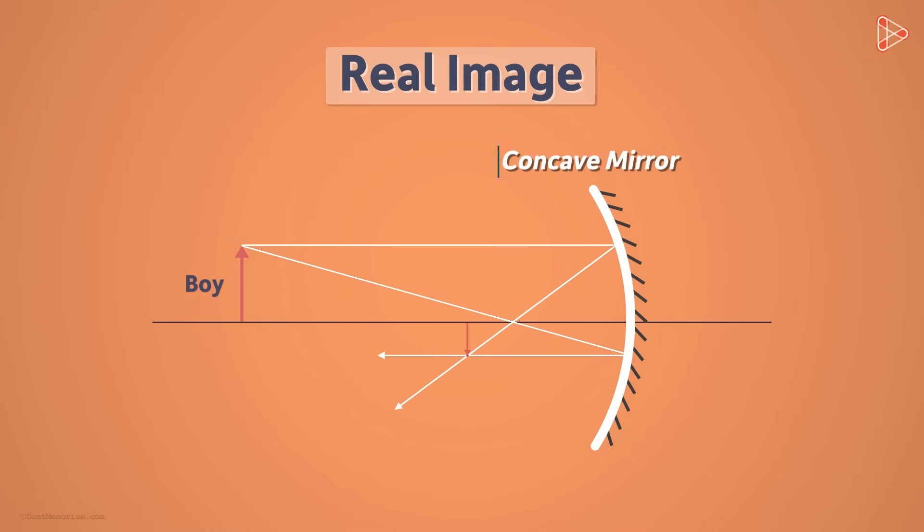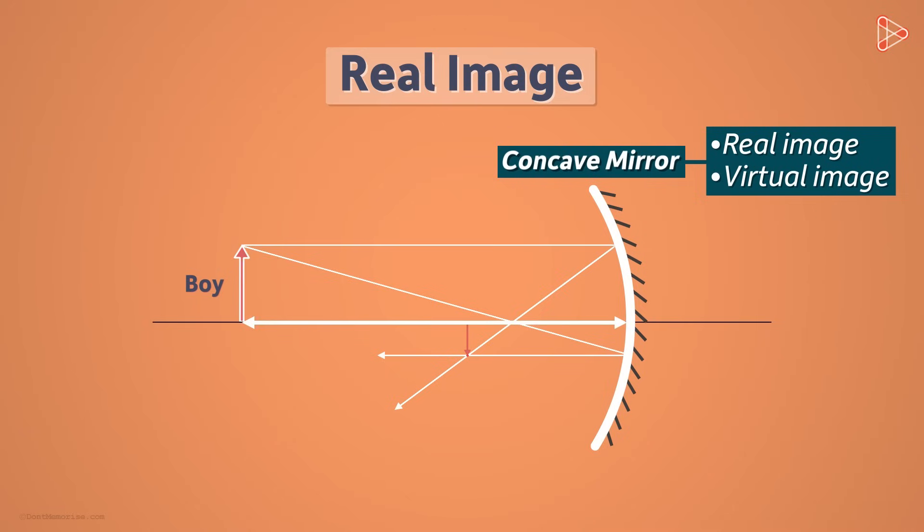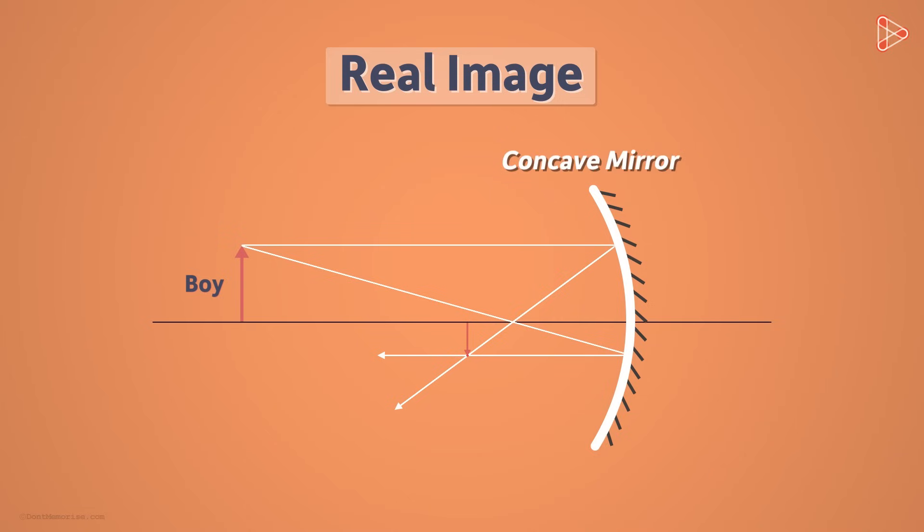I mentioned earlier that concave mirrors form real images. In fact, they form both real and virtual images. And what does it depend on? It depends on the distance of the object from the mirror. We will learn more about the real images formed by concave mirrors in our future videos.